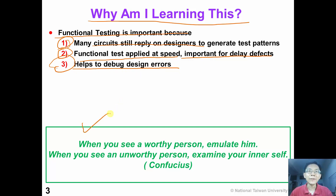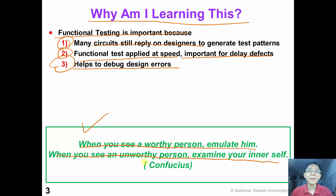Here we have a famous Chinese saying by Confucius. He said that when you see a worthy person, emulate him. When you see an unworthy person, examine your inner self. I think this is a very wise saying suitable for this chapter, and we should keep this wise saying in our mind when we study functional testing.